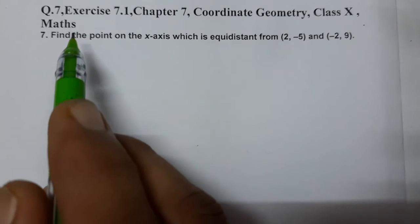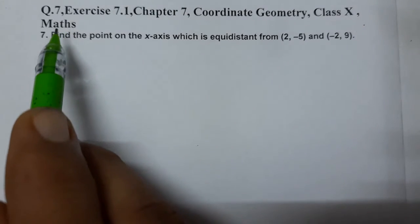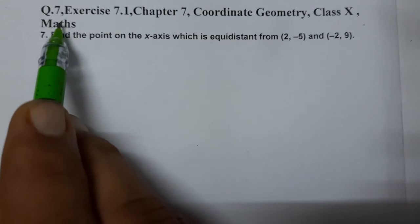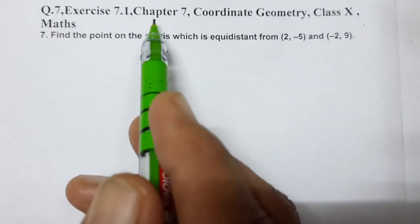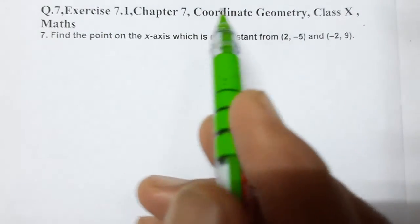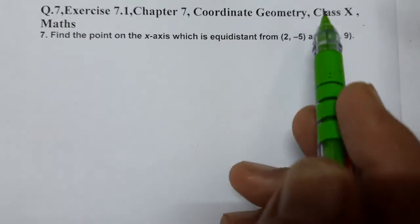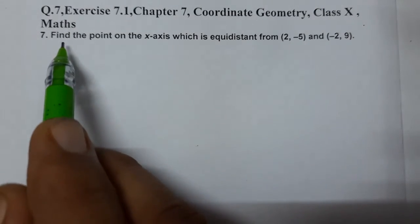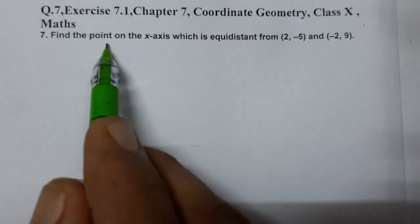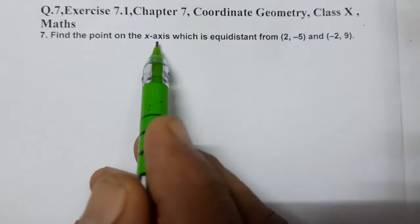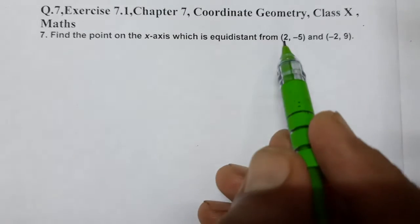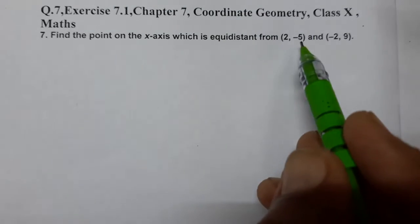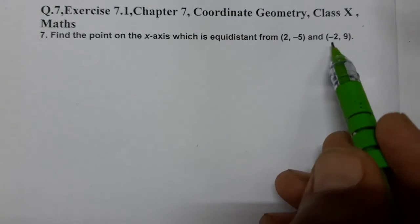Hello students, today we are going to do question number 7 of Exercise 7.1, Chapter 7 Coordinate Geometry, Class 10 Mathematics. Find the point on the x-axis which is equidistant from (2, -5) and (-2, 9).